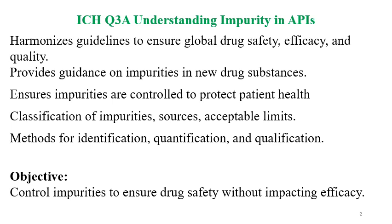Impurities are not part of the API and not part of excipients, and they may be toxic in nature. The potency of the API gets affected, leading to an impact on safety and efficacy. ICH guidelines harmonize to ensure global drug safety, efficacy, and quality. This guideline provides guidance on impurities in new drug substances — that is, APIs or active pharmaceutical ingredients — and ensures impurities are controlled so that public health can be protected.